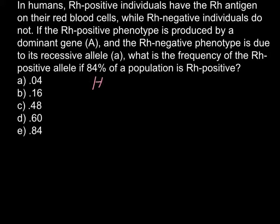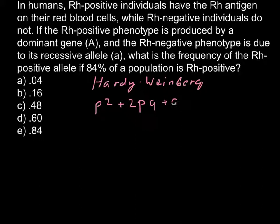Let me write it down. The formula is: p² + 2pq + q² = 1. For p², we have capital A, capital A — that is the homozygous dominant condition. The 2pq term represents the heterozygous condition, capital A small a. And q² represents the homozygous recessive condition.